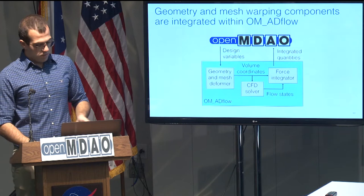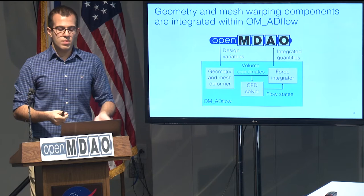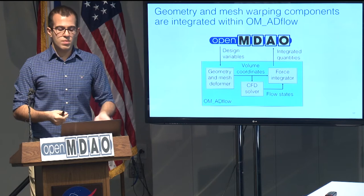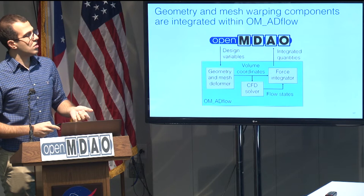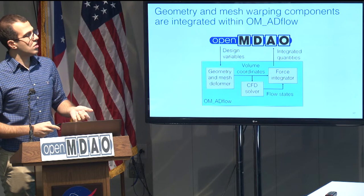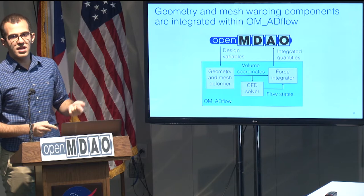With this approach, we integrated the geometry and mesh warping components within OMAD flow. On the top level, what OpenMDAO sees is that it passes design variables to the OMAD flow group. We take those design variables, update our geometry and the mesh, get volume mesh coordinates, solve for the CFD, and integrate the forces, then pass back integrated quantities. So it becomes very easy to couple other codes in OpenMDAO using this approach.